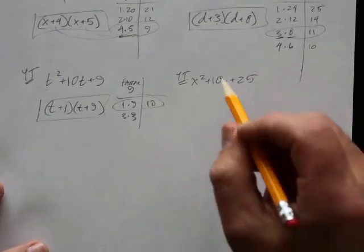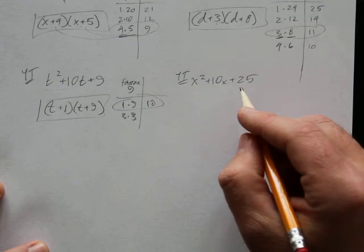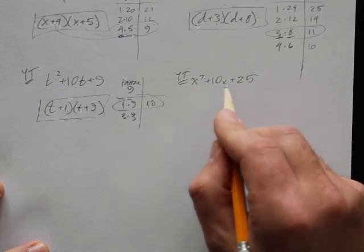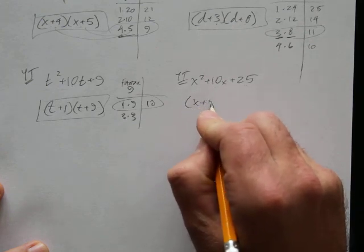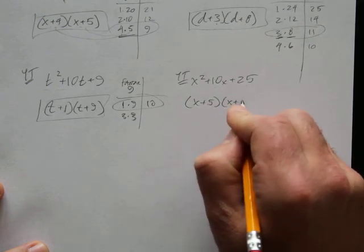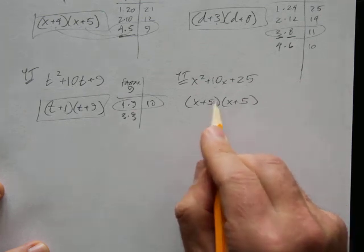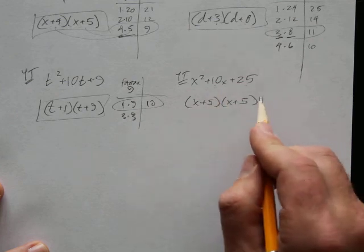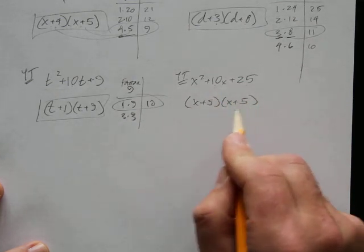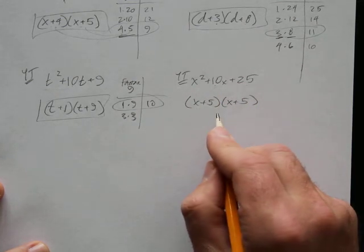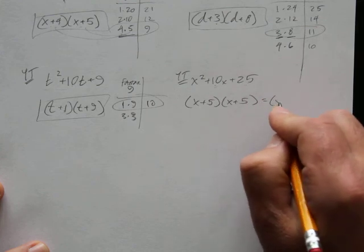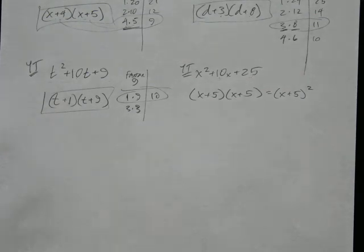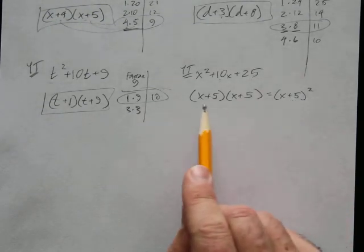For x squared plus 10x plus 25, you should have gotten x plus 5 times x plus 5, since 5 times 5 is 25 and 5 plus 5 is 10. When both factors are the same, you can rewrite this as x plus 5 squared.